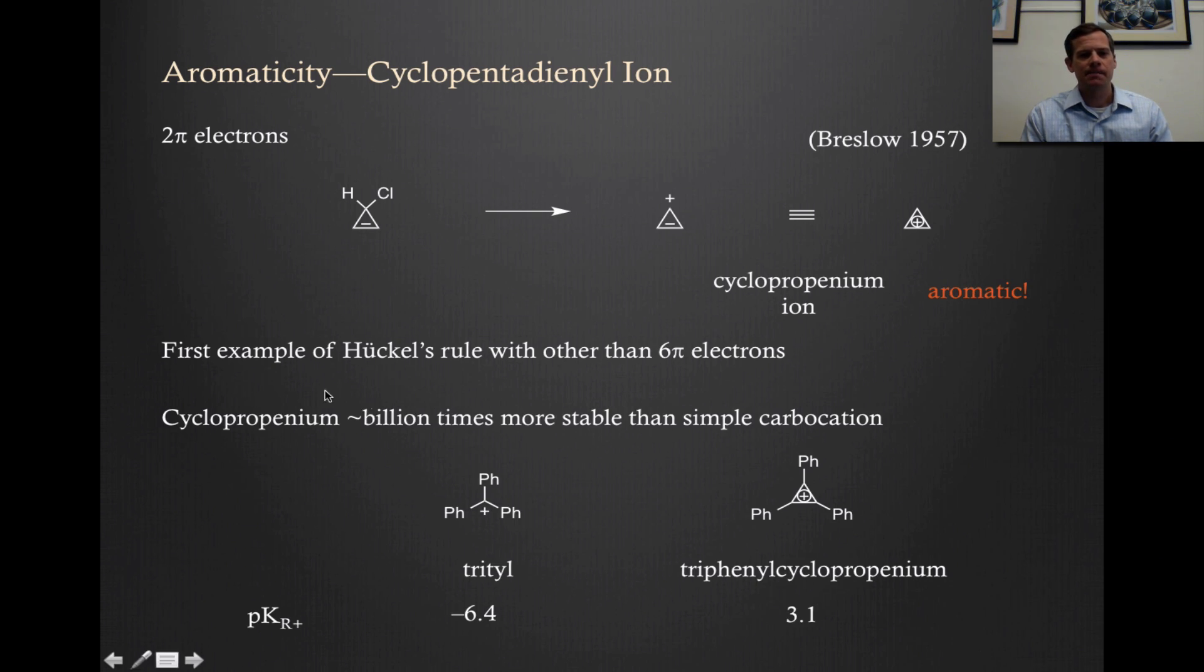We can look at stability. It turns out that cyclopropenium is a billion times more stable than a simple carbocation. This value here is called PKR plus, a physical measurement of cation stability. I've compared the triphenyl methyl cation, which is called trityl, versus this cyclopropenium version, triphenyl cyclopropenium. Two cations that look somewhat structurally similar, three phenyls, but one has an aromatic ring here. You can see by the numbers there's nine orders of magnitude difference between these two. That difference is due to the aromaticity of the cyclopropenium ring. That's what aromaticity gets you: stable carbocations.